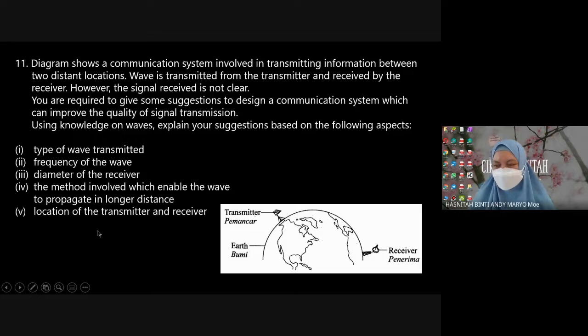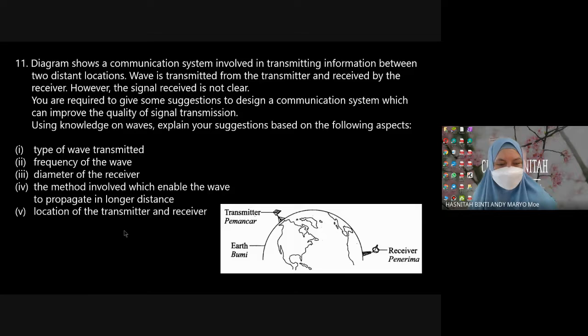Any questions? We have four minutes left. Can we go to page 156, Uji Kendiri 5.7? There is one question with parts A, B, and C. Let's try them together. The diagram shows the electromagnetic spectrum - R is on the left, followed by x-ray, ultraviolet, visible light, infrared, microwave, radio wave. What is R?